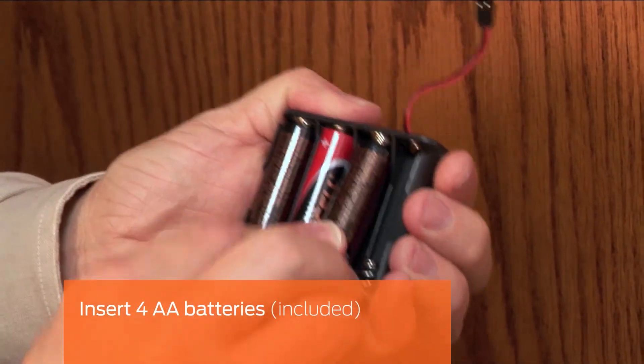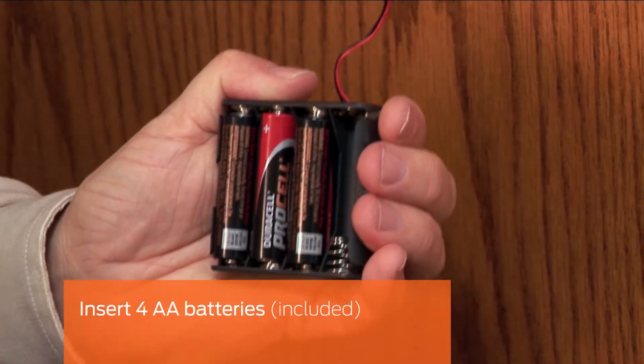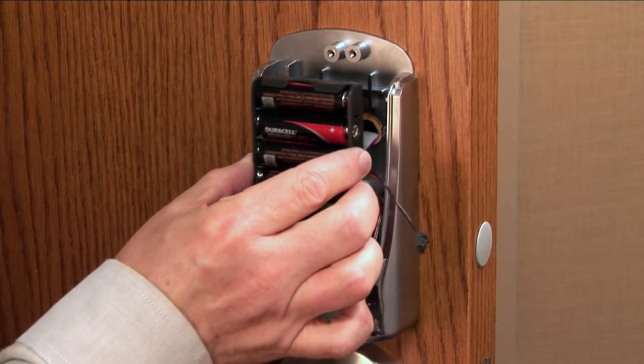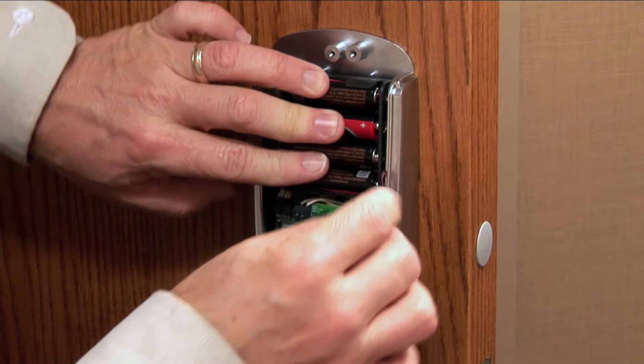Now insert the four AA batteries into the battery holder, noting proper polarity as shown. Install the battery holder with the cable pointing to the right.